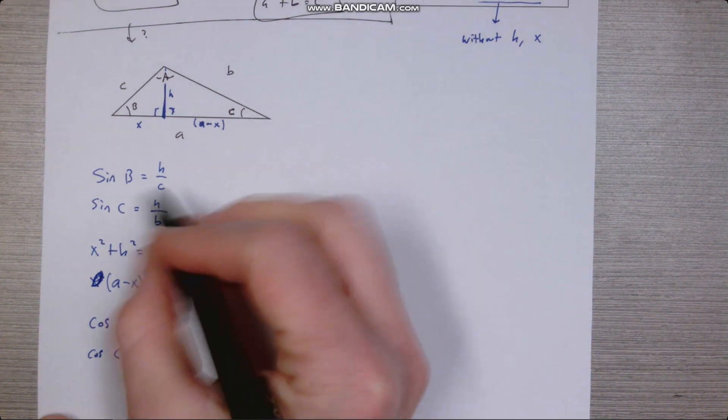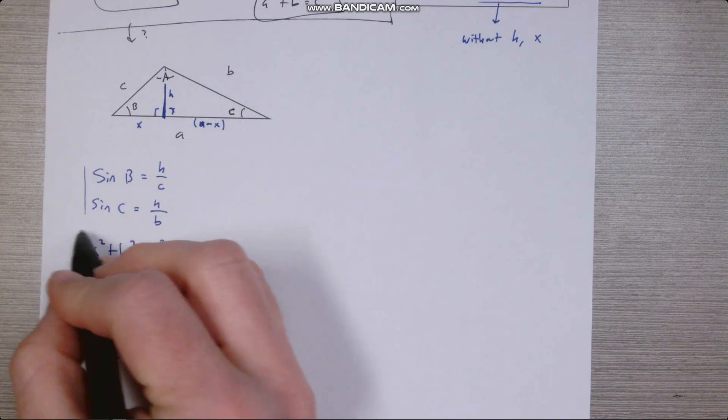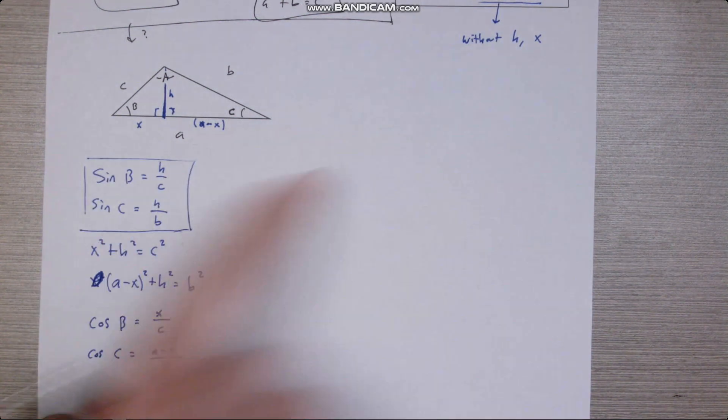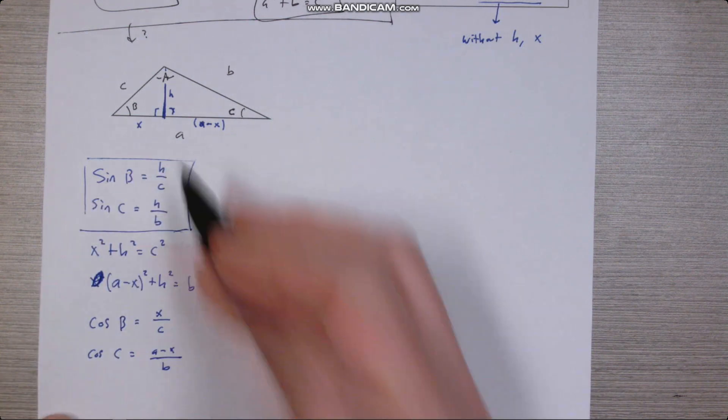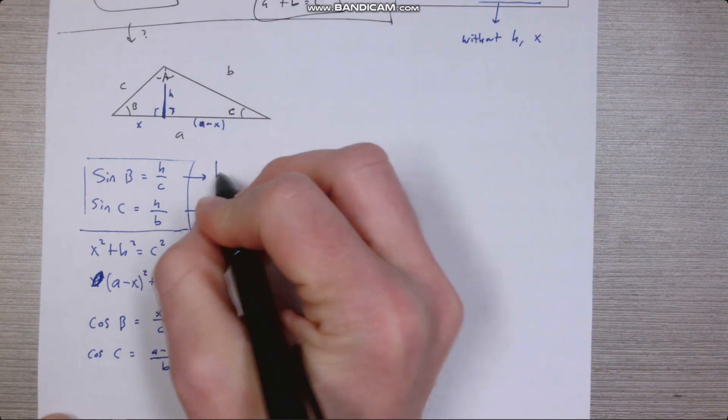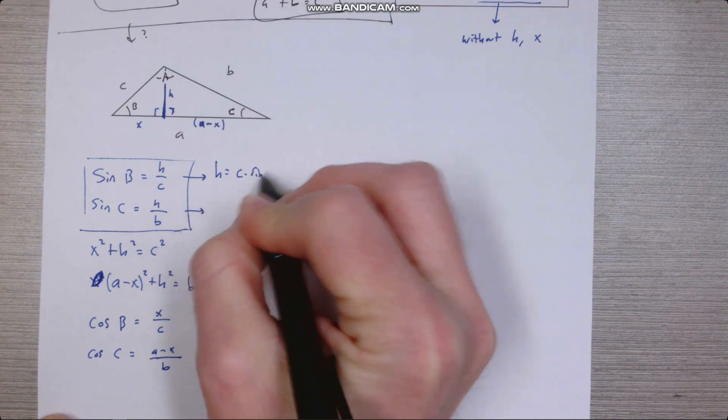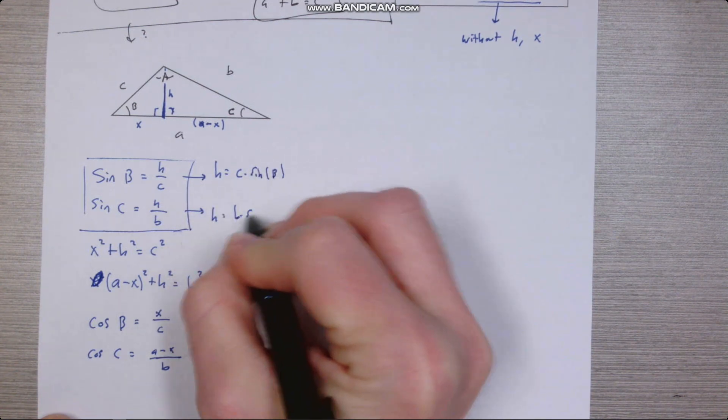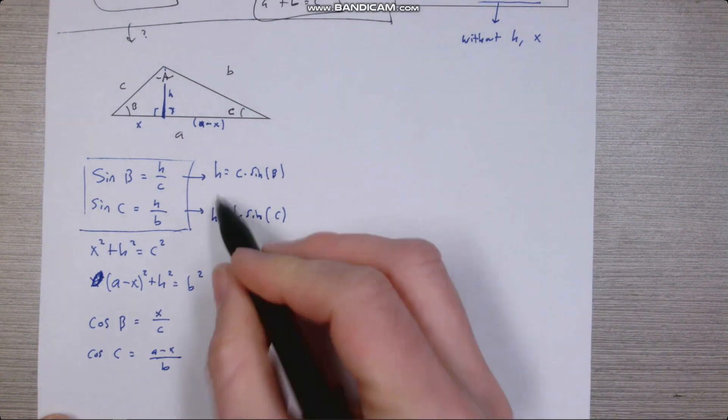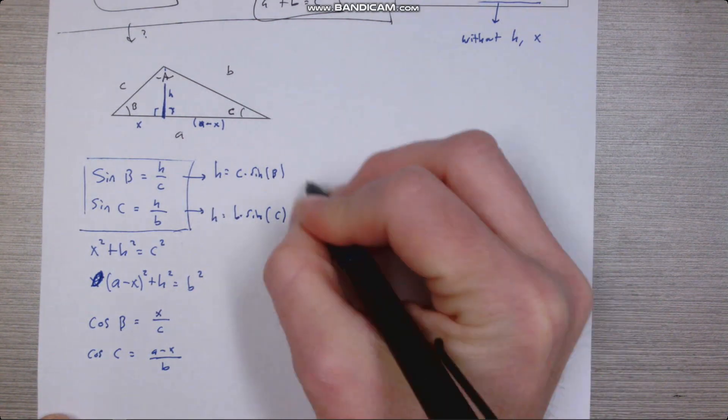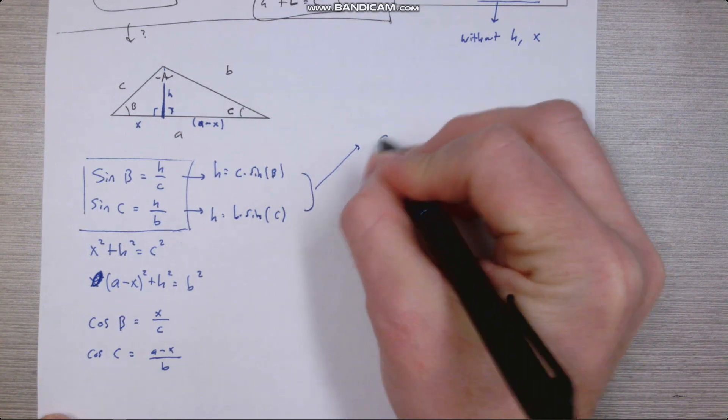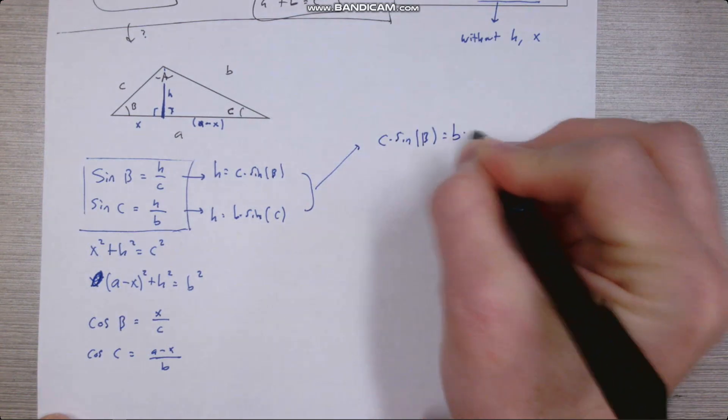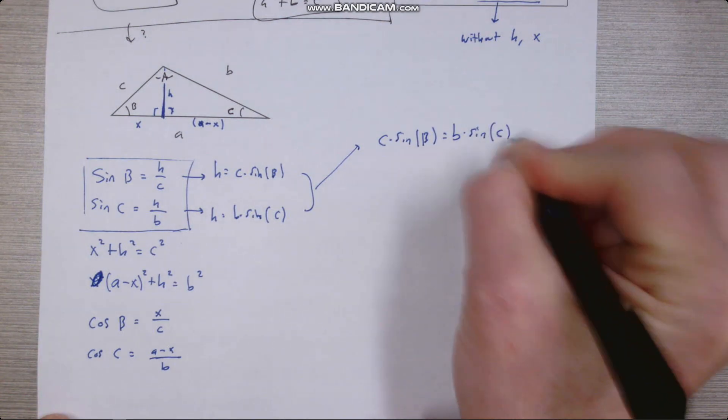Okay, so one thing I did, or one thing I saw here in these first two, the only variable we want to get rid of in either of these equations is the H. So if we isolate H, we'll have H is C times sine B, and also H is B times sine C. Those two H's are the same as each other, so we can rewrite this as C sine B equals B sine C, which has a nice kind of symmetry to it.